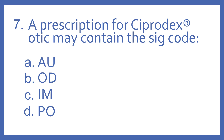Number seven. A prescription for Ciprodex OTIC may contain the SIG code A, AU; B, OD; C, IM; or D, PO.